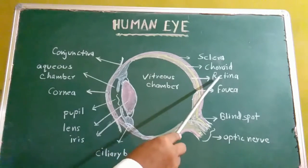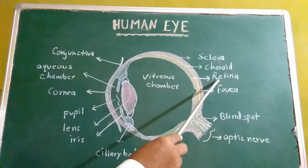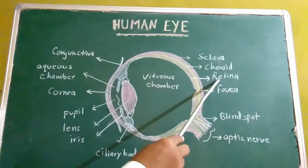Inner layer is retina. It contains three layers of cells: ganglion cells, bipolar cells, and photoreceptor cells. There are two types of photoreceptor cells: rods and cones.